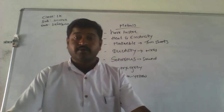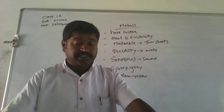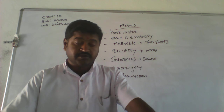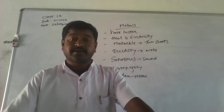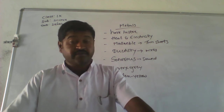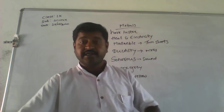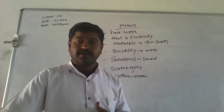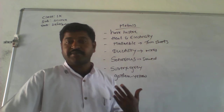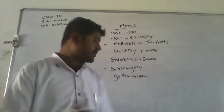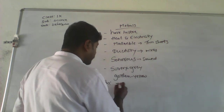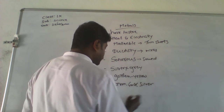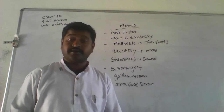So till now, we have studied distillation, fractional distillation, and separating gases from air using fractional distillation. Then physical change and chemical change. Then elements — which have three categories: metals, non-metals, and metalloids. We have completed metals. Examples of metals are iron, gold, and silver.